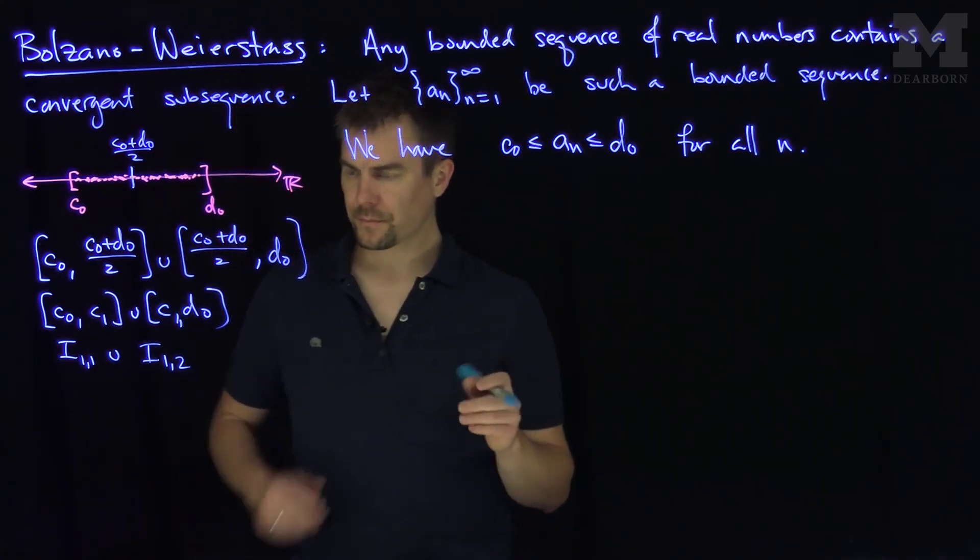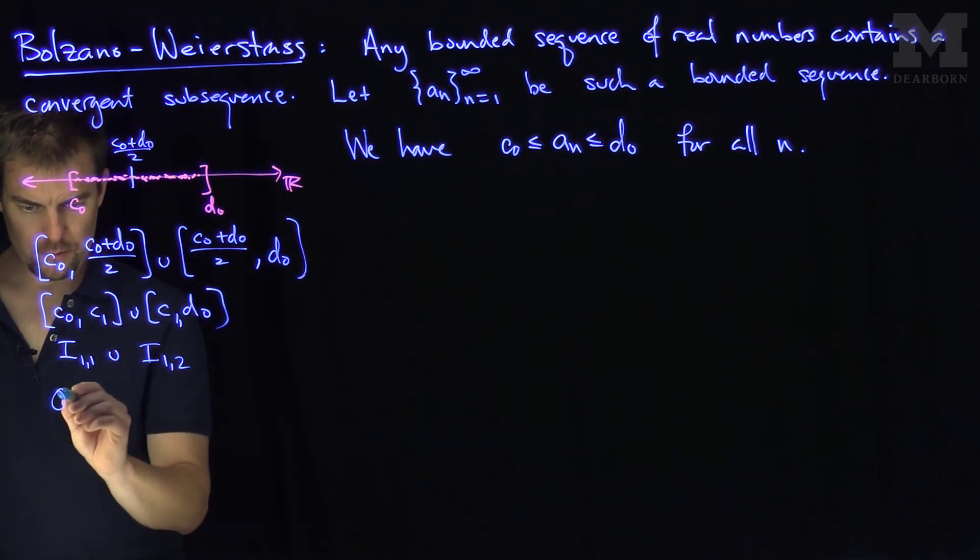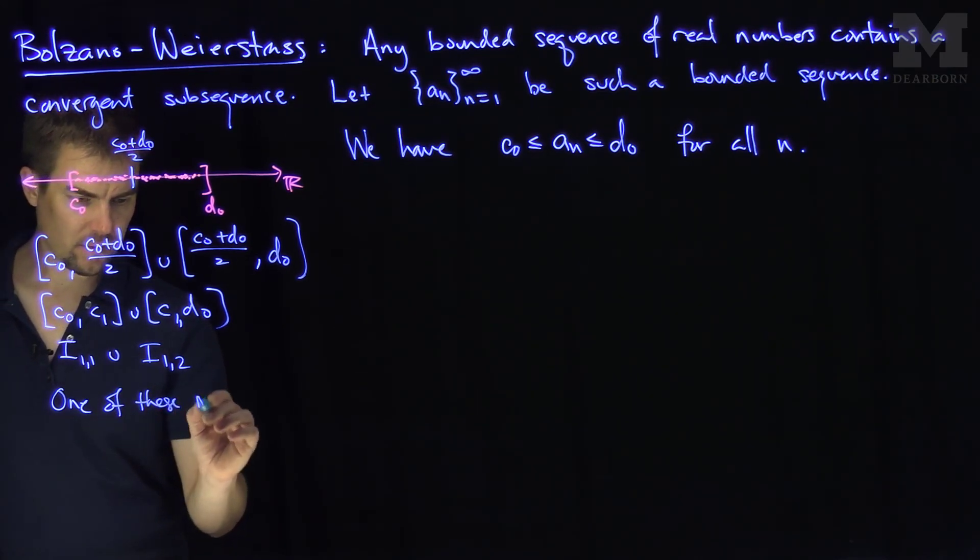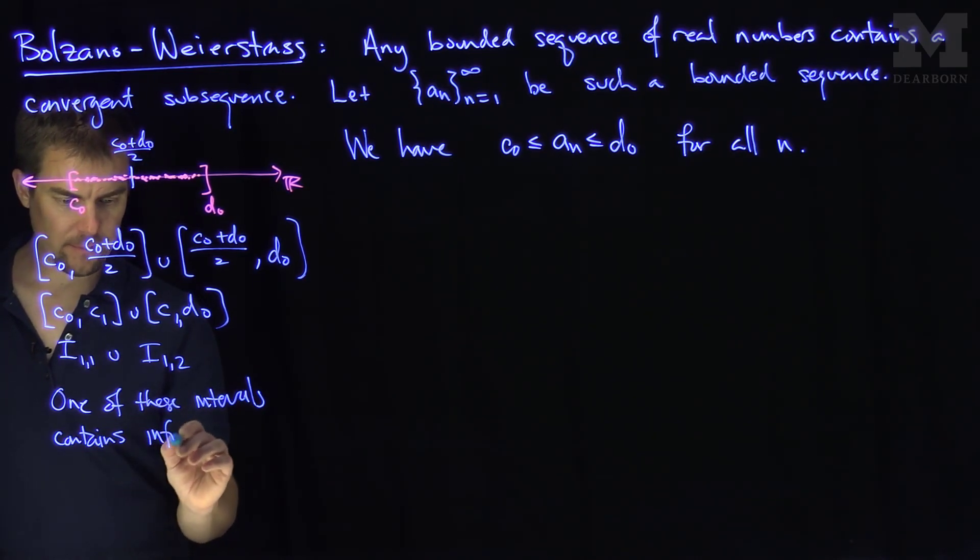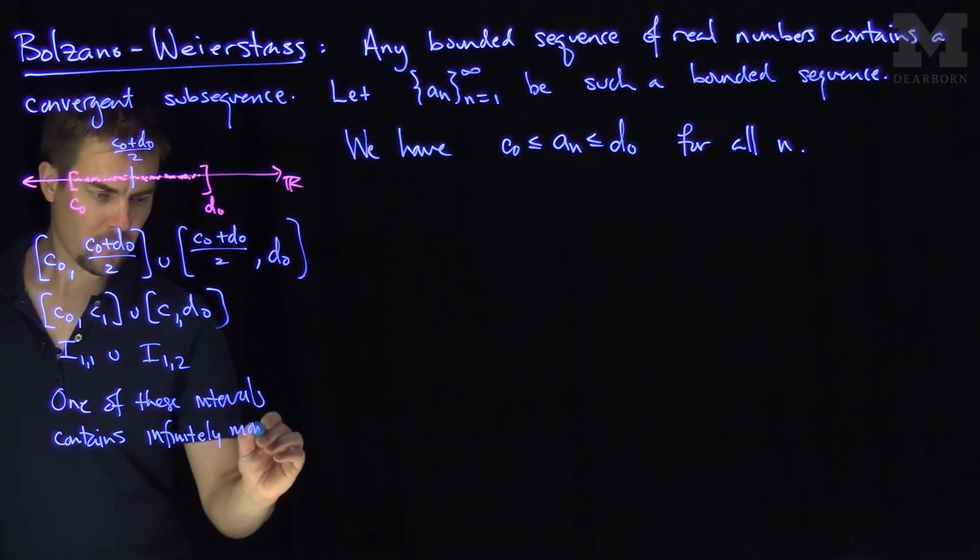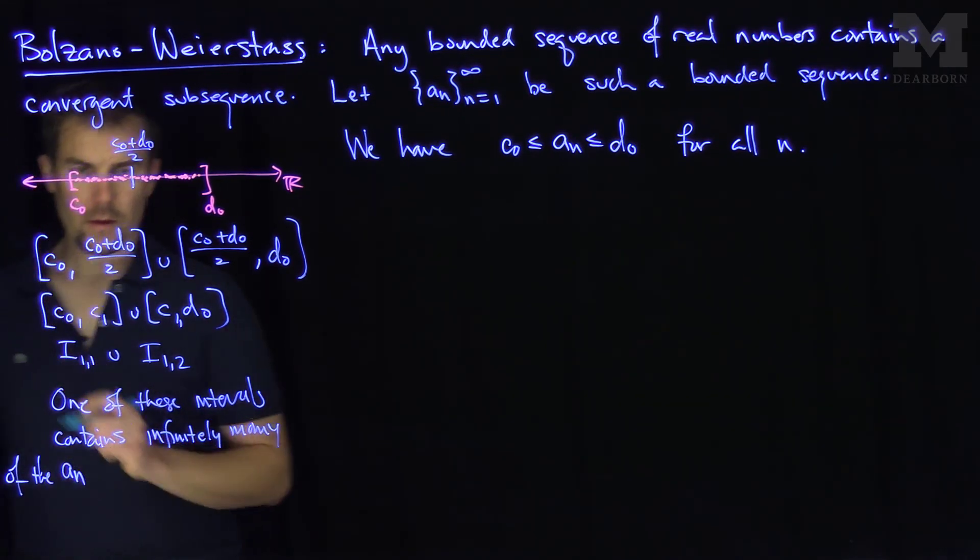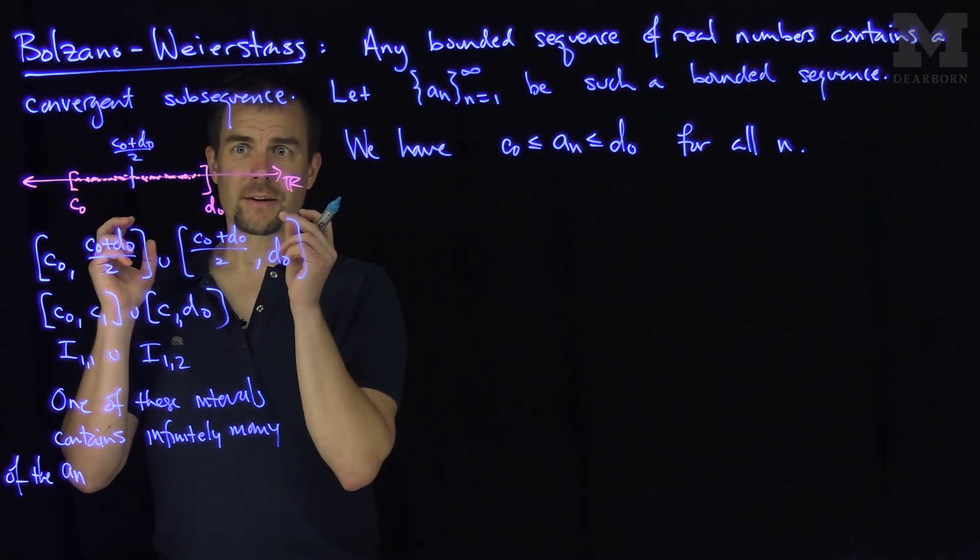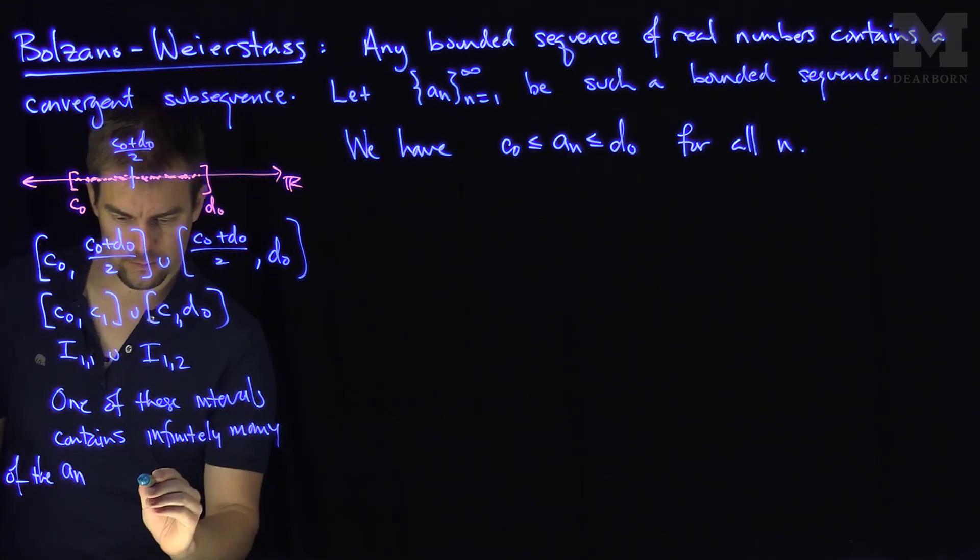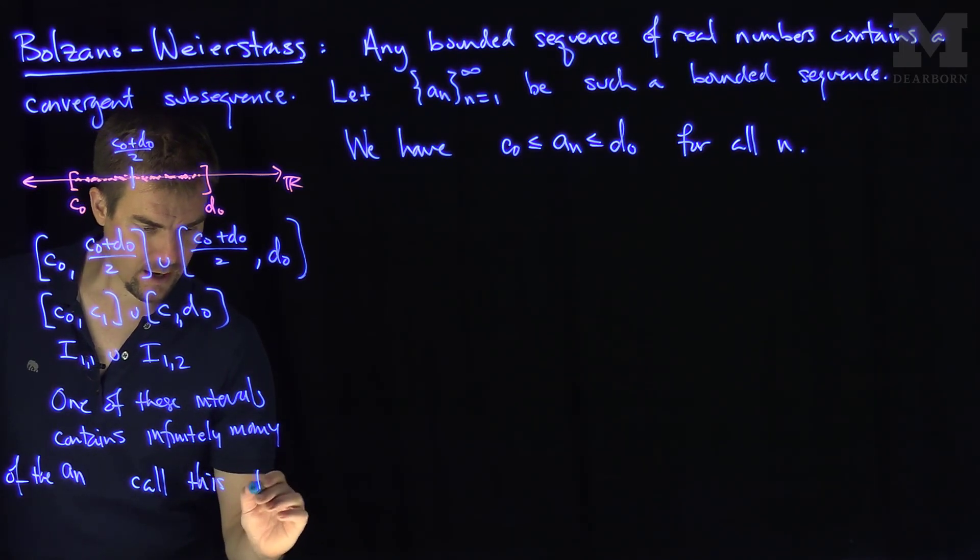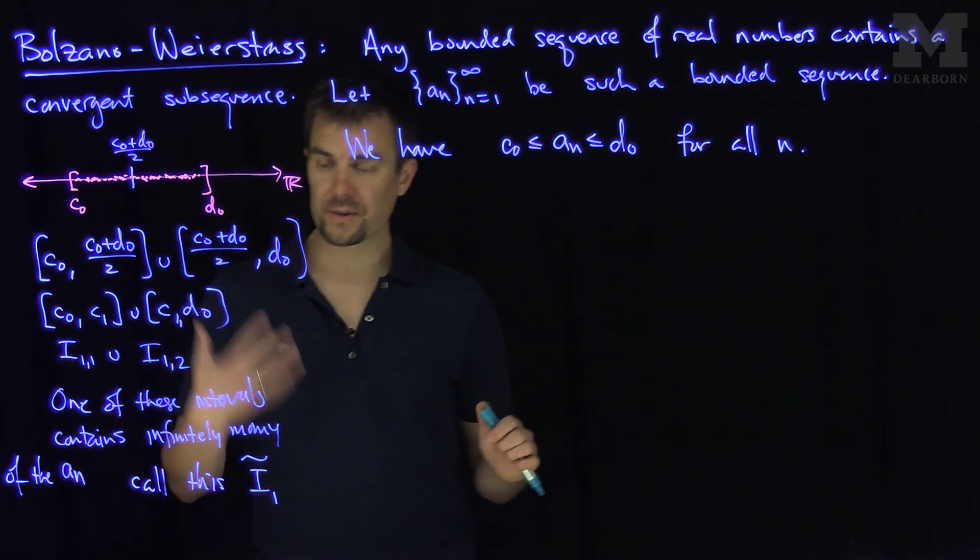And so now, we've cut into two parts. One of these intervals contains infinitely many an terms. Because if they both contain a finite number of an terms, I have a finite number in my sequence, which we don't have. We have an infinite number, so one of them has an infinite number of these terms. Let's call this i1 tilde. So i1 tilde is either i11 or i12. So i1 tilde contains infinitely many.